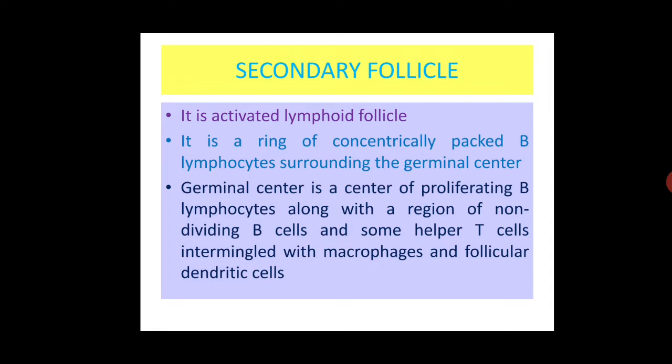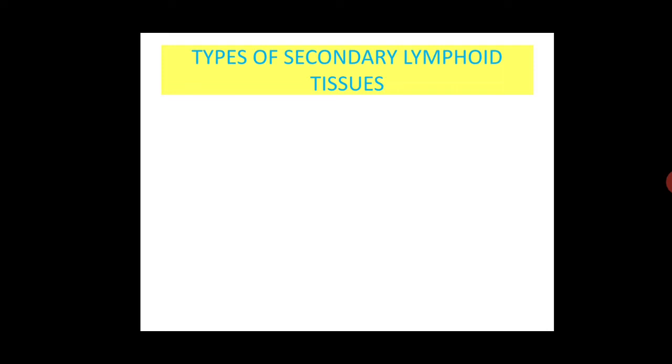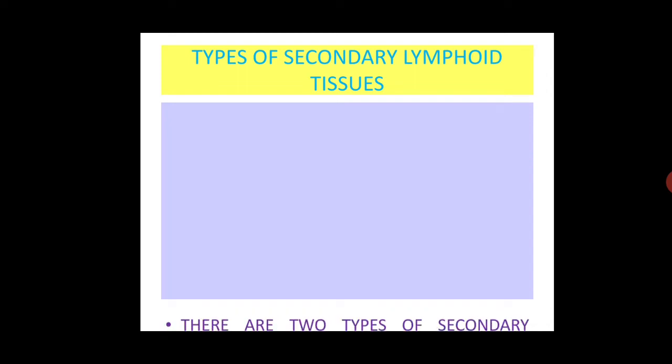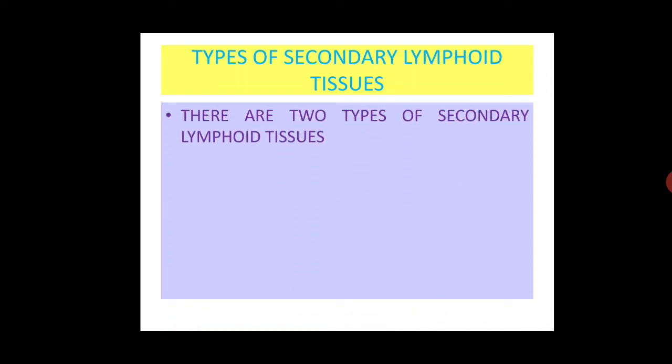Only those B cells are selected for entry into germinal centers that have strong antigen binding capacity. Inside germinal centers, B lymphocytes differentiate into plasma cells or memory cells.